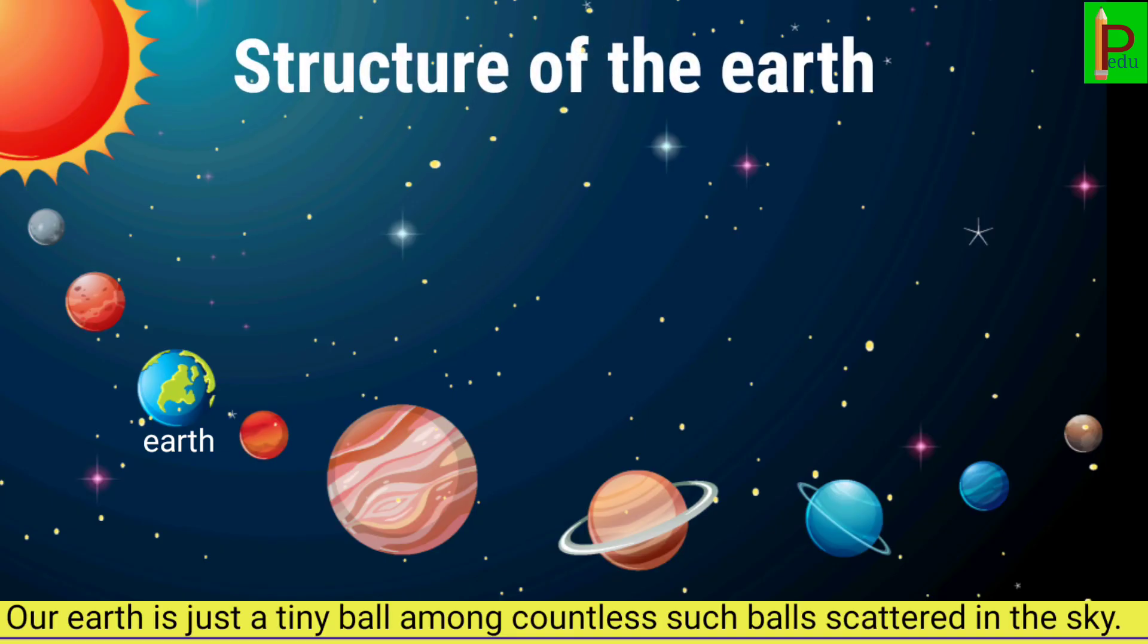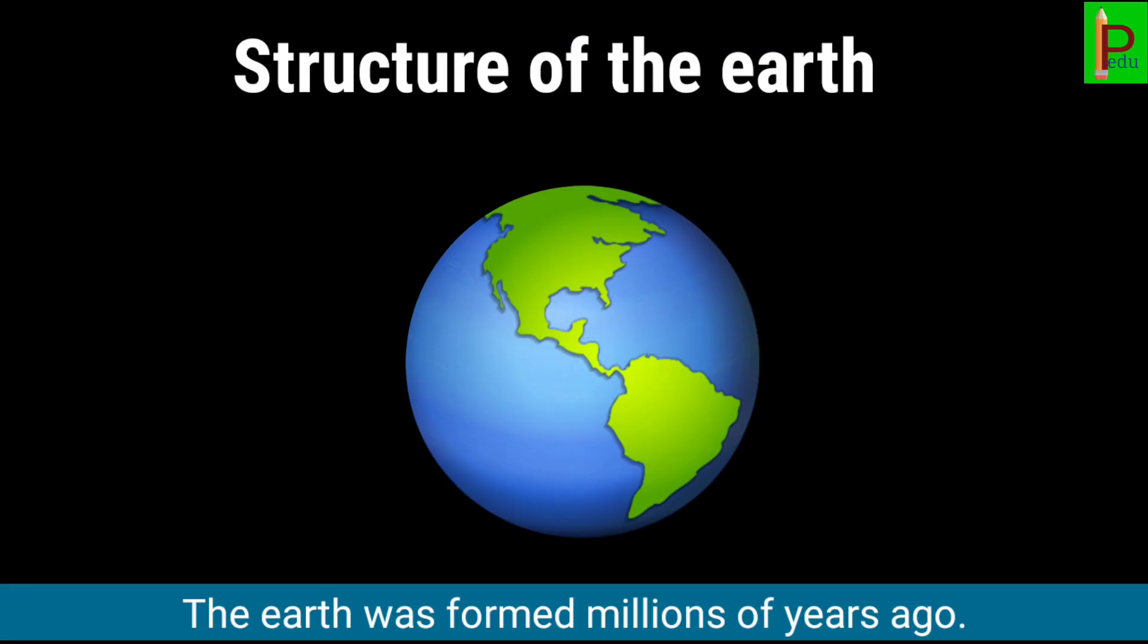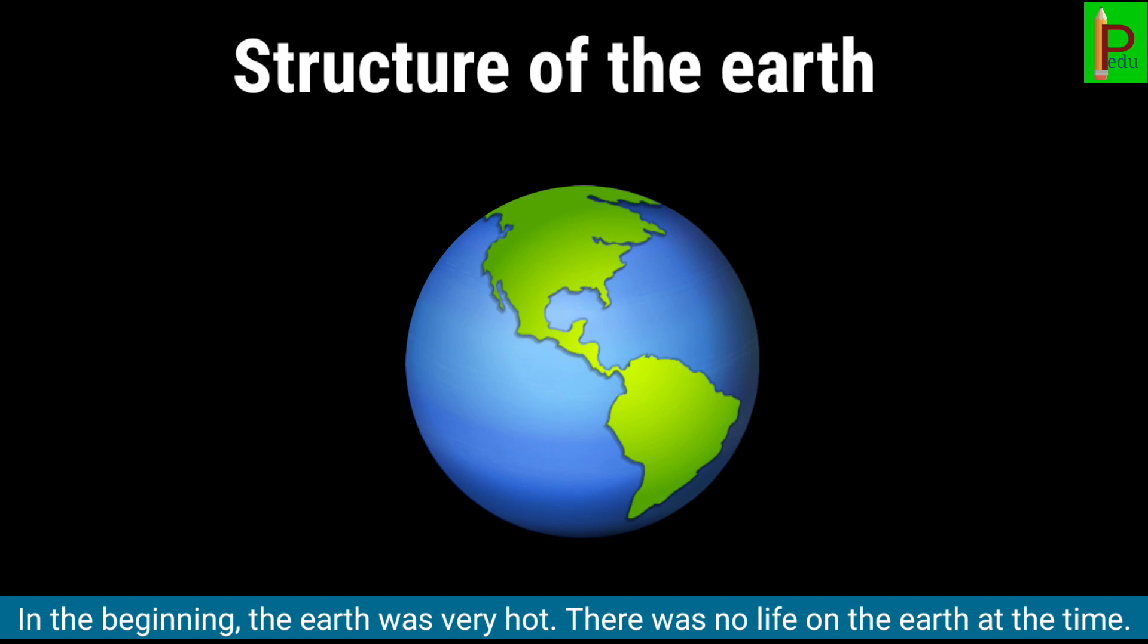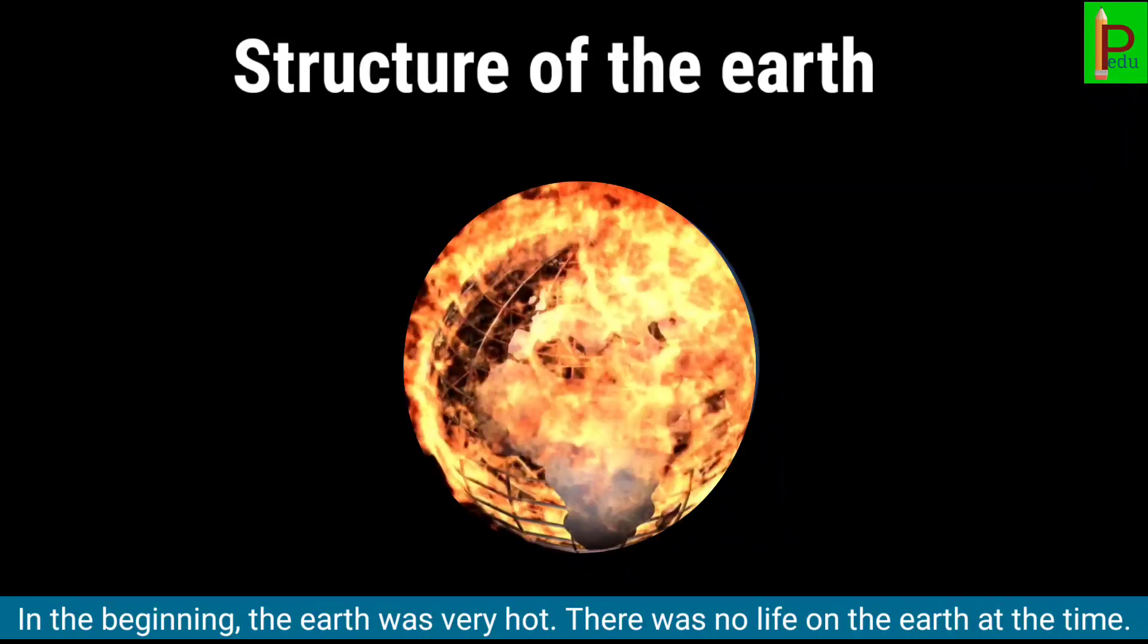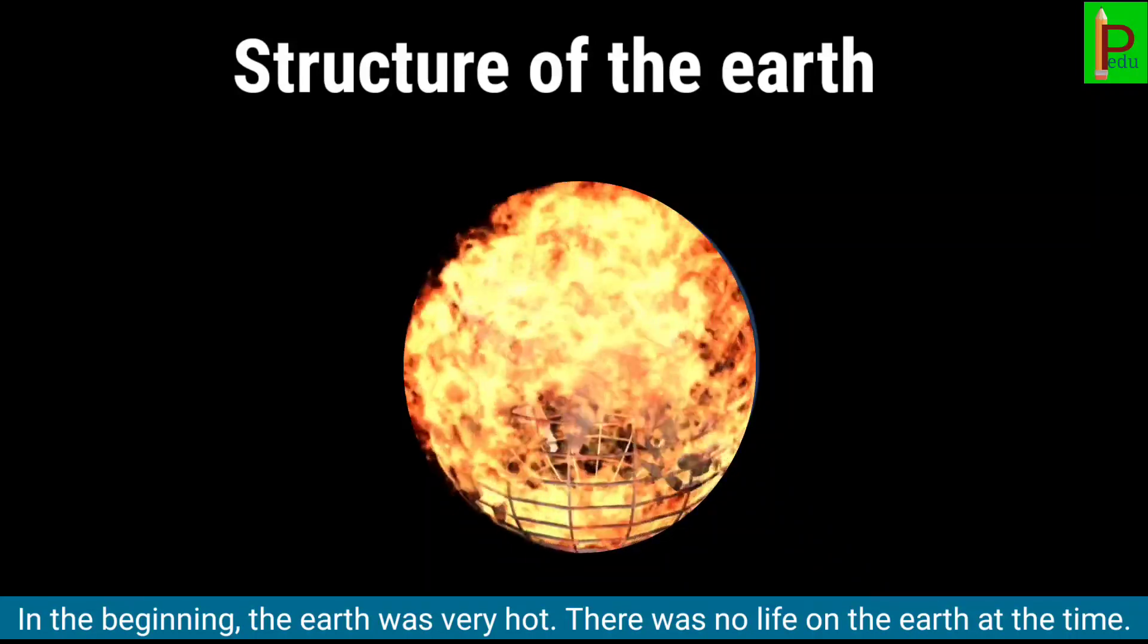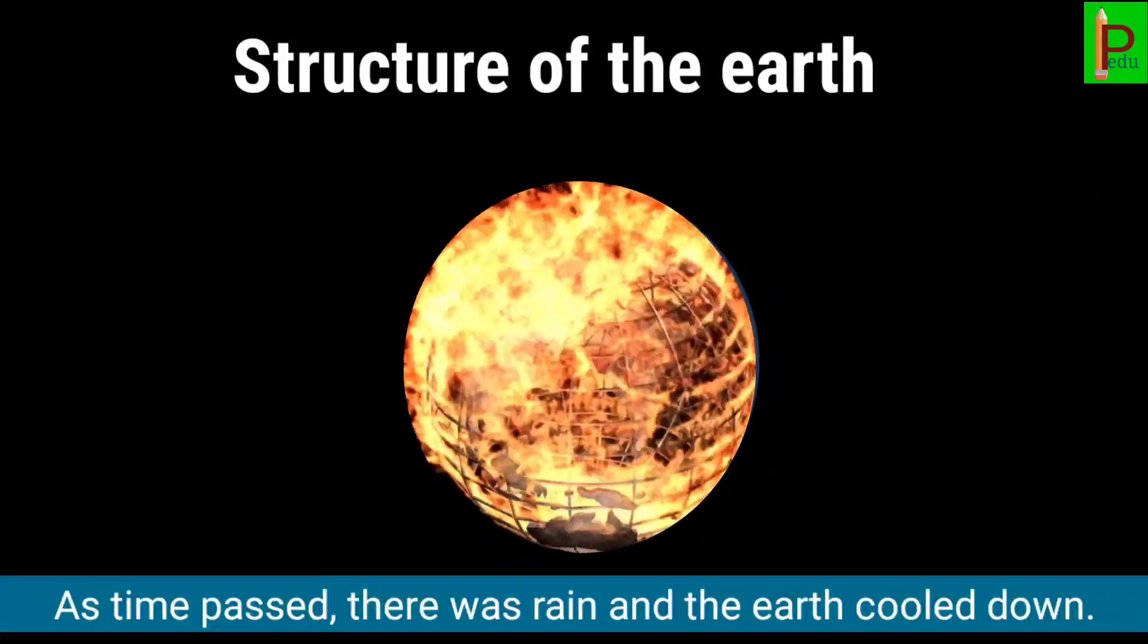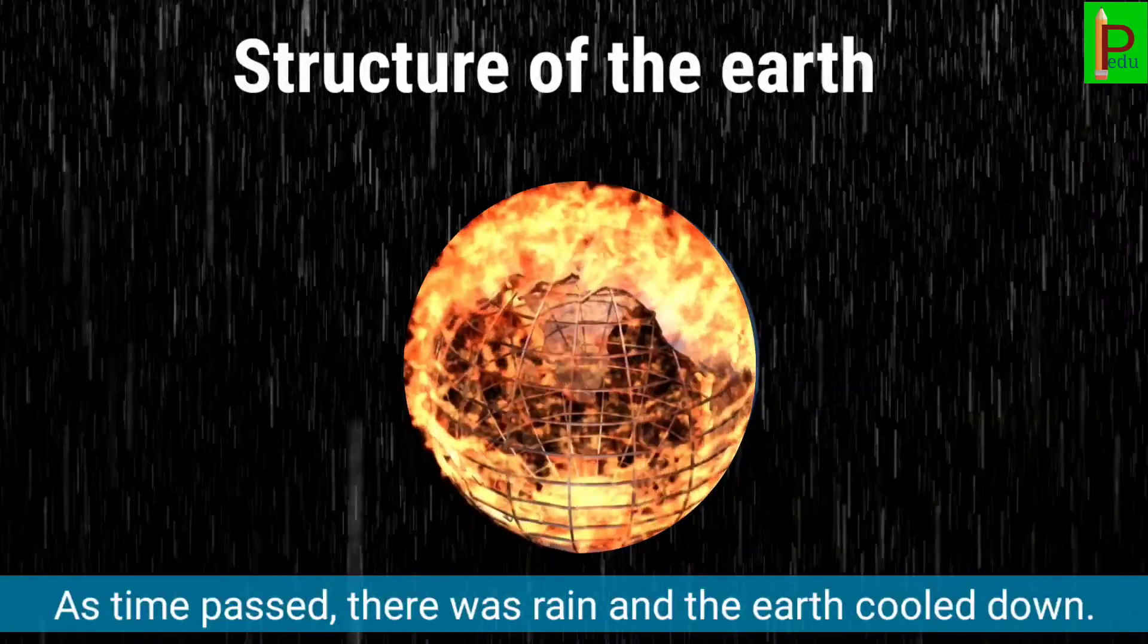Structure of the earth. Children, our earth is just a tiny ball among countless such balls scattered in the sky. The earth was formed millions of years ago. In the beginning, the earth was very hot. There was no life on the earth at that time. As time passed, there was rain and the earth cooled down.